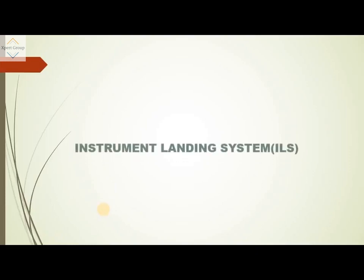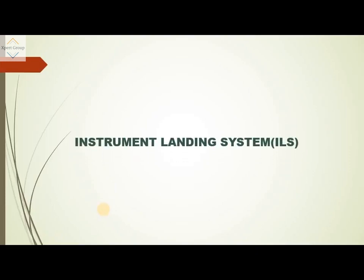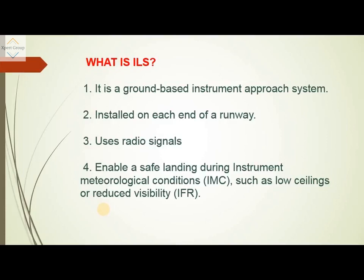Hello everyone. In this video series, part 66, today we are going to study about the Instrument Landing System. The instrument landing system is a ground-based navigational aid used for safe landing of aircraft during poor visibility and stormy environmental conditions. It is installed at each end of the runway and uses radio signals for communication with the aircraft. It enables safe landing using digital instruments during instrument meteorological conditions (IMC), such as low ceilings or reduced visibility under IFR.